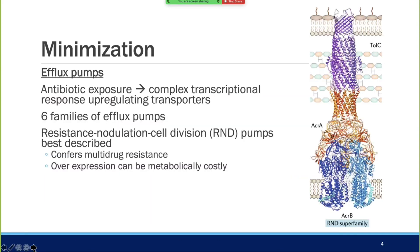Discussing minimization further: efflux pumps are mainly the RND pump family, which confers multi-drug resistance. With this pump family, you'll see resistance to tetracyclines and aminoglycosides. One thing that can happen when a bacteria develops this superfamily of pump is that it can be metabolically costly, so you may see resistance go in and out with different susceptibilities when treating a patient.